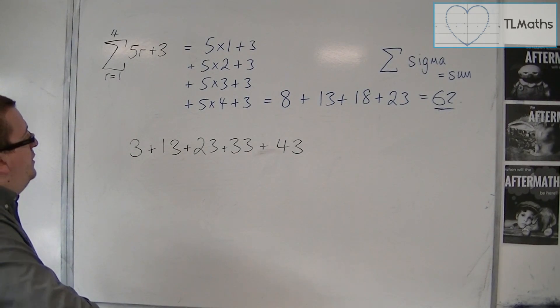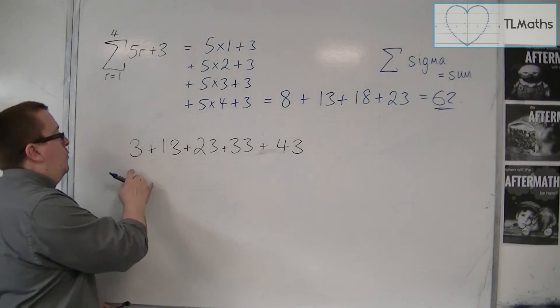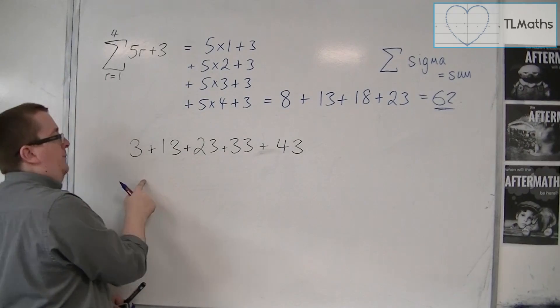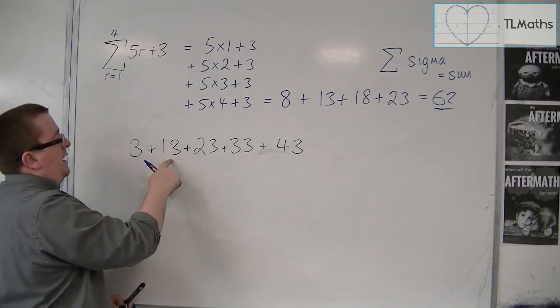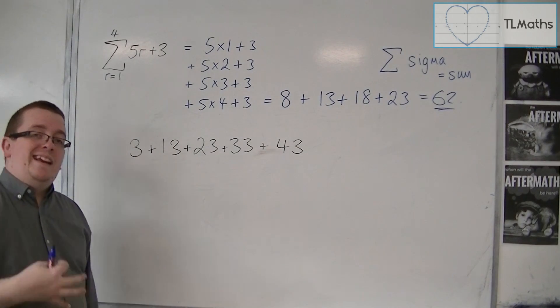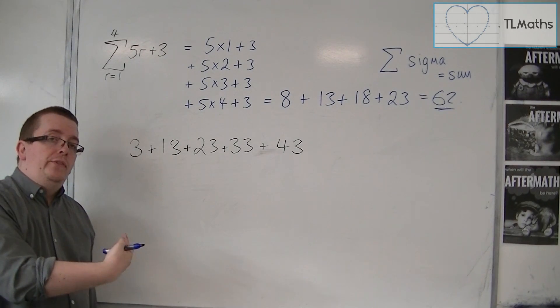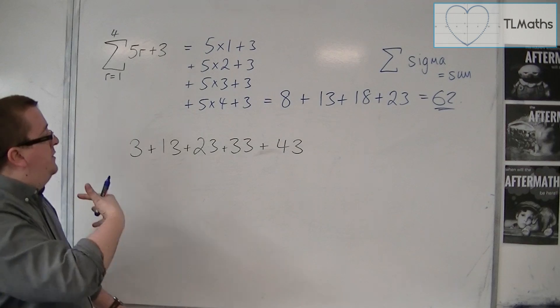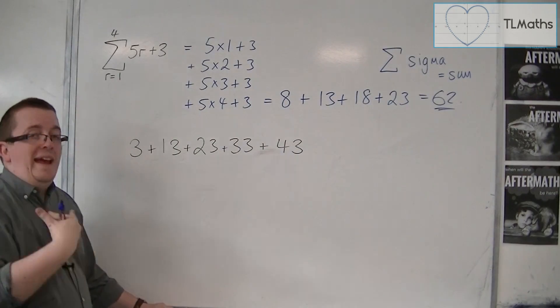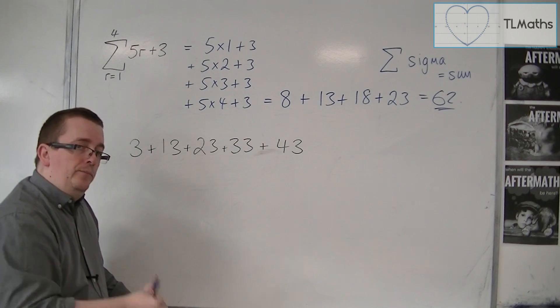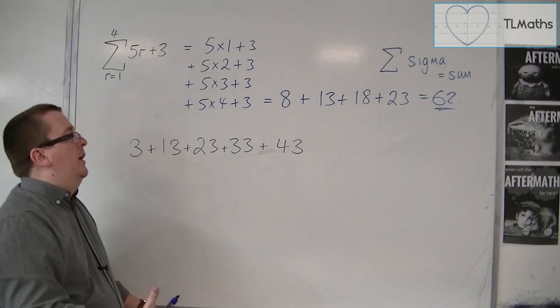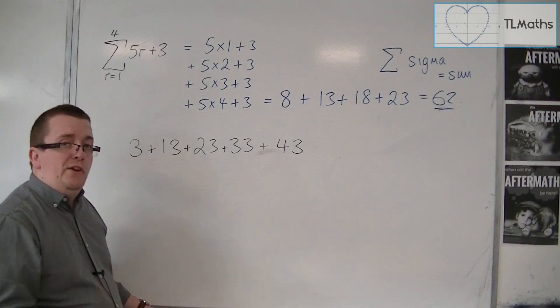So the first thing that I would do is I would figure out what sort of sequence this is, and I can see that it's going up in 10s each time, and so it is an arithmetic sequence. And because we are adding them up, we call this an arithmetic series. So when you're adding entries together in a sequence, we refer to it as a series.